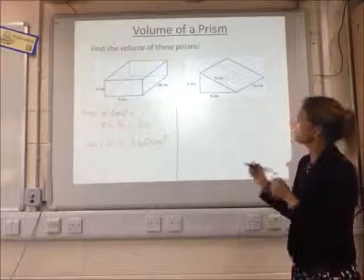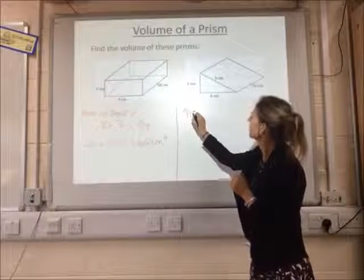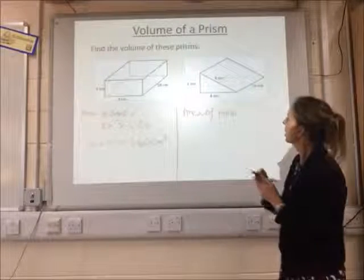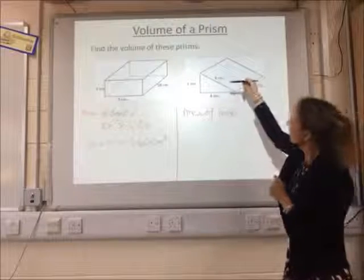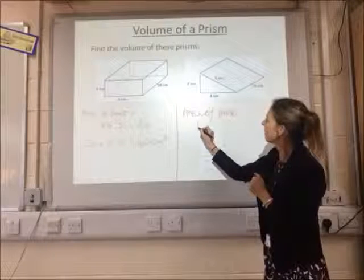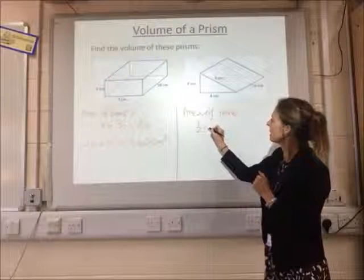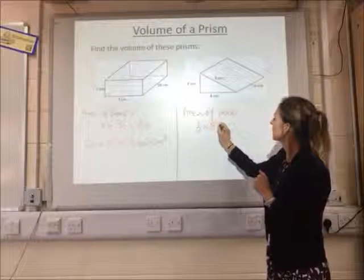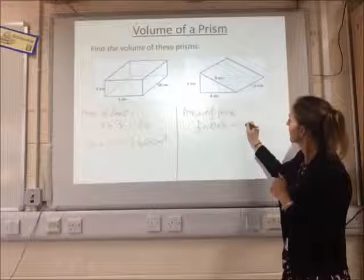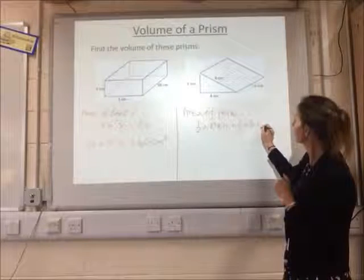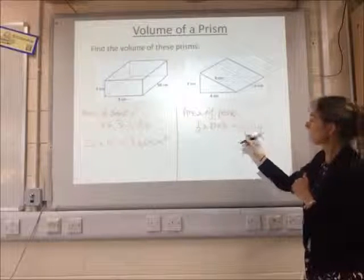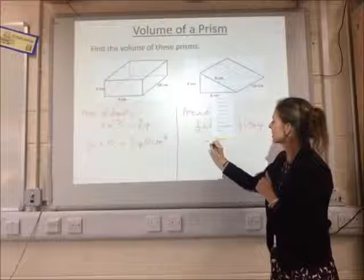On this one, same thing again — we've got to find the area of the front, and we do this by finding the area of the triangle. To find the area of the triangle, it's a half times base times height. So it's a half times 3 times 4. 3 times 4 is 12, and half of 12 is 6 centimetres.